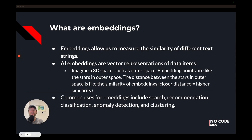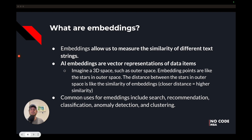So what are embeddings? They allow us to measure the similarity of different text strings. They are vector representations of data items. Imagine a 3D space such as outer space — planets and stars can go in any direction. Embedding points are like the stars in outer space. Think about how there are stars in outer space in all directions. The distance between the stars in outer space is like the similarity of embeddings.